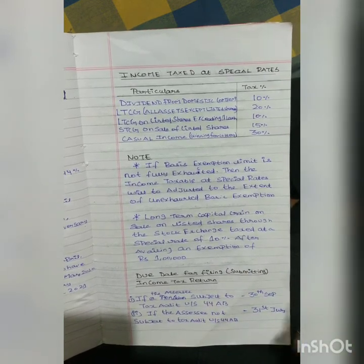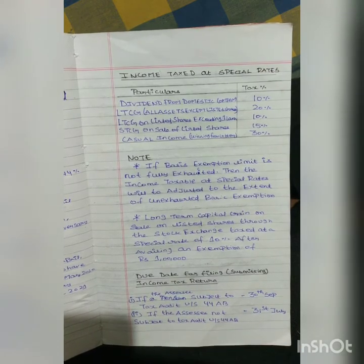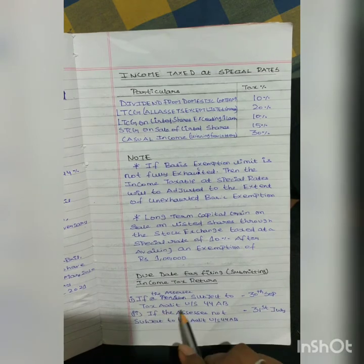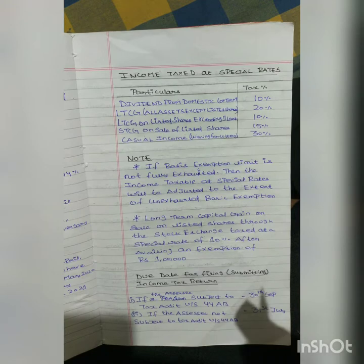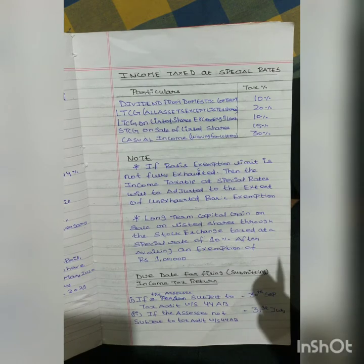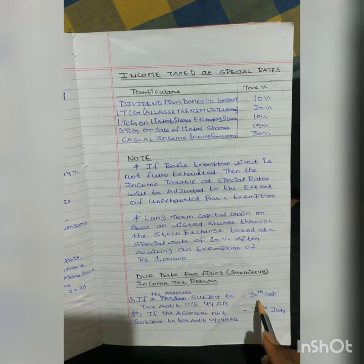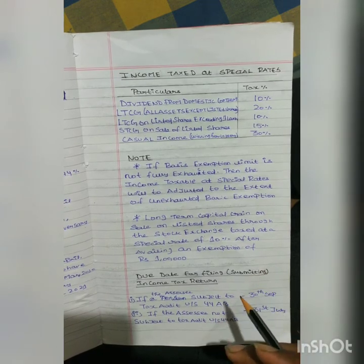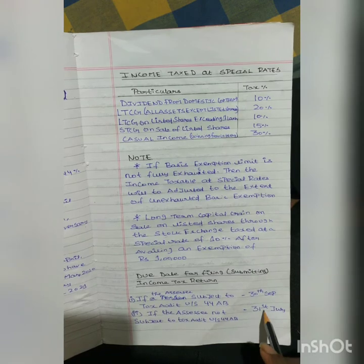Due dates for filing income tax returns: if the assessee is subject to a tax audit under section 44AB, the return must be filed by 30th September. If a person is not subject to a tax audit, the return must be filed by 31st July.